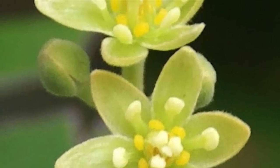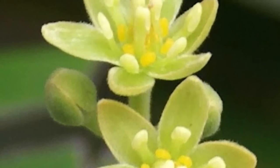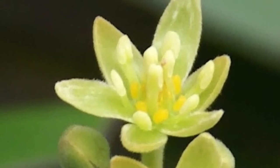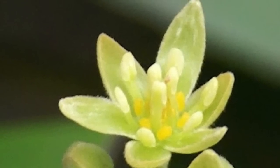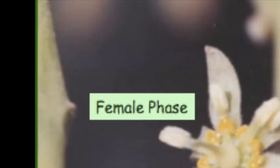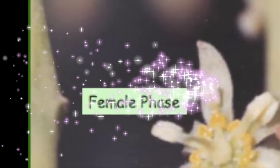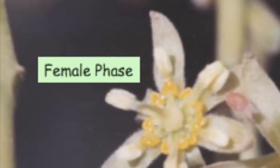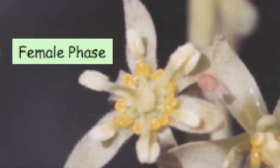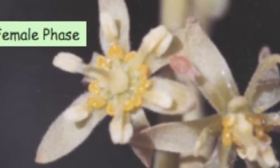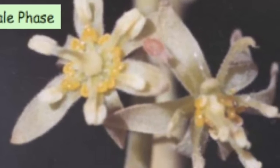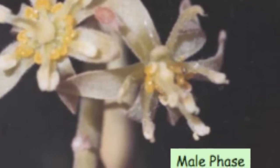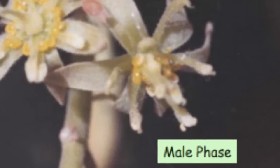Each flower will open first as a female flower, then as a male flower. So to pollinate, the female phase of one flower must be open at the same time as the male phase of another flower.